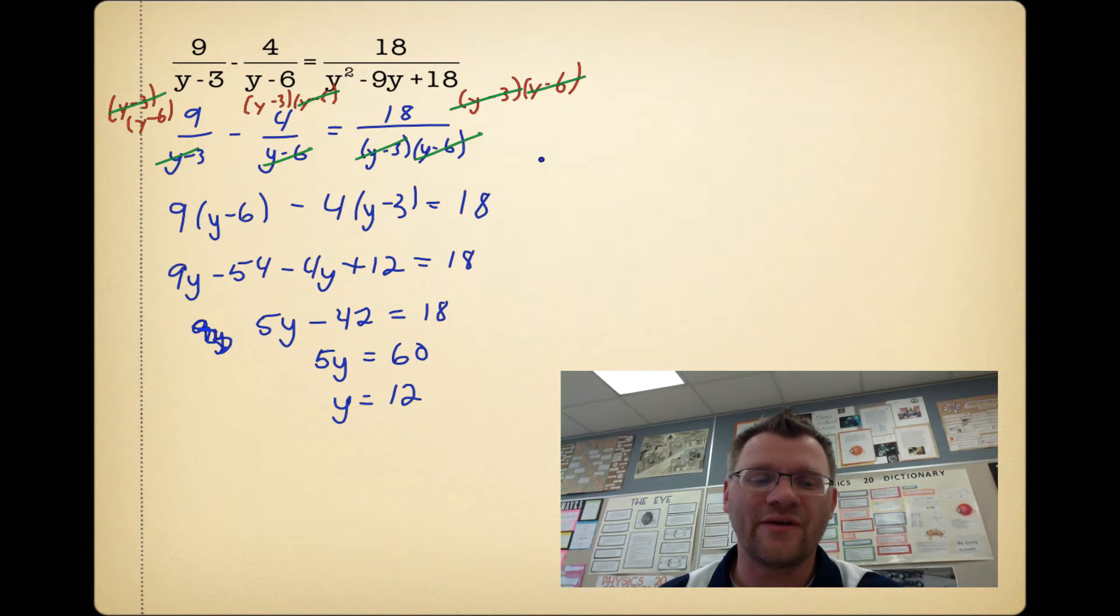I double-check with my non-permissible values. My non-permissible values would be these denominators, so y can't equal 3 and y can't equal 6. And I have a y value of 12, and it doesn't equal 3 or 6, so I am good to go.